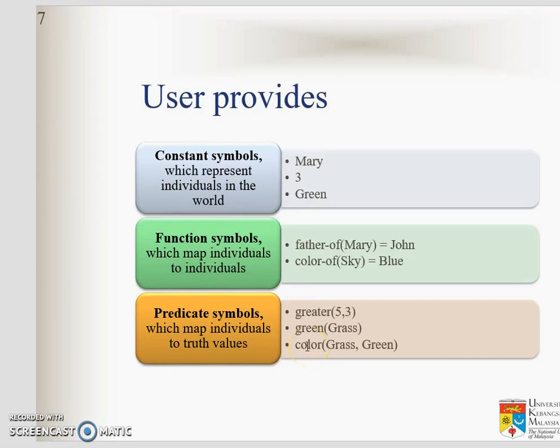For example, this sentence, 5 is greater than 3. Grass is green. You can also write here shirt inside the bracket. So grass and shirt are greens. If the outside is color, this is the relation or properties. So grass color is green. This is to map individuals to truth values. What is the values of each individual sort of objects?